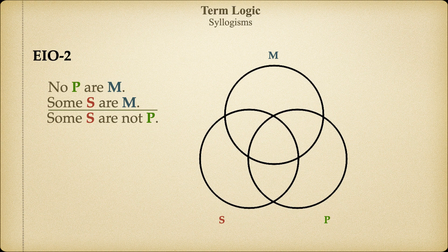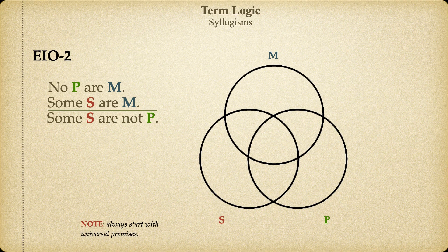Now that we've got our diagram set up, we're ready to add the information asserted in the premises and see whether the conclusion will have to be true. Note that we have universal and particular premises in this argument. Whenever that happens, we always start with the universal premise as a rule. In this case, the universal premise is the major premise, so that's where we'll start. If it had been a particular premise as the major premise, we would fill in the universal premise first.